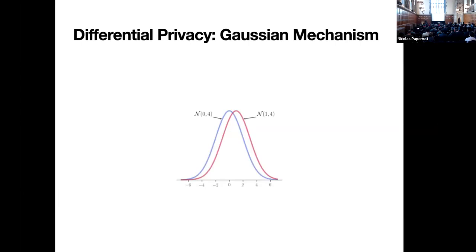Yesterday I realized that I'm going to be the first one to talk about differential privacy, so I'll give a brief introduction. Imagine you have a database and someone asks a question — the true answer is zero. Differential privacy says I'm not going to tell you zero; I'm going to draw a sample from a Gaussian distribution around zero, giving you an approximate answer from that distribution.